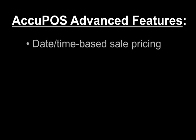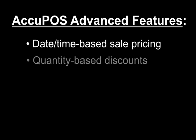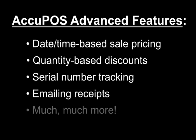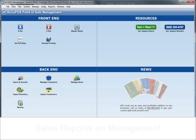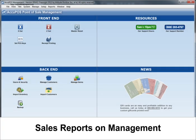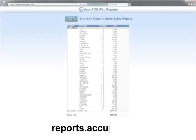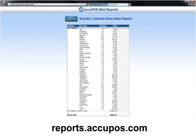AccuPause also offers advanced features for nearly every retail environment, including date-time based sale pricing, quantity-based discounts, serial number tracking, email receipt options, and much more. Additionally, sales reports are always available in real time from your included PC management console or your secure online reports website.